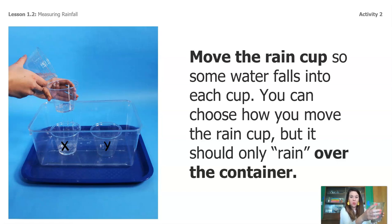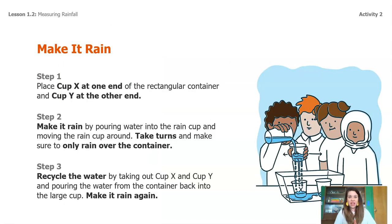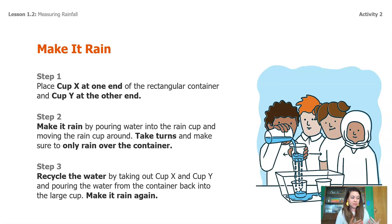You can move the rain cup so that water falls as much or as little into the two cups as you choose, just make sure you're keeping the water inside your container. If you're watching online and want to do this at home, now is a good time to pause and follow the directions. Once you've gotten some water into your cups X and Y, you can unpause and we'll analyze our observations and measurements.